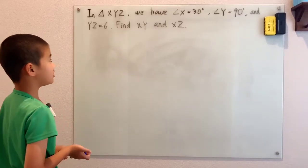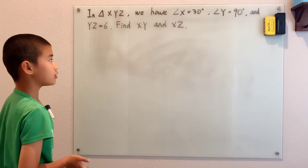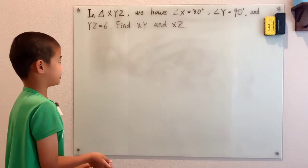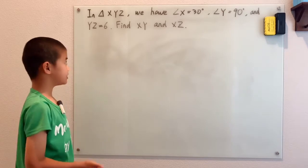In triangle XYZ, we have angle X equals 30 degrees, angle Y equals 90 degrees, and YZ equals 6. Find XY and XZ.